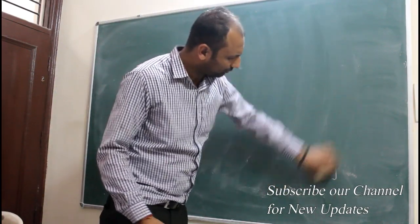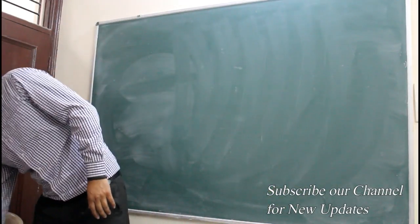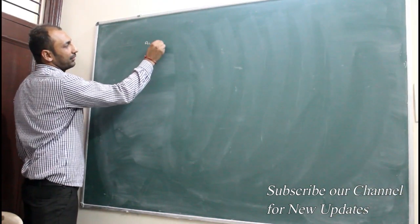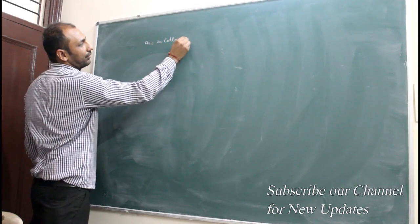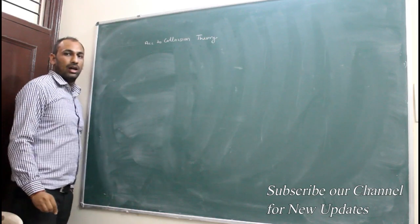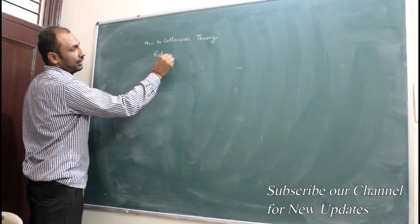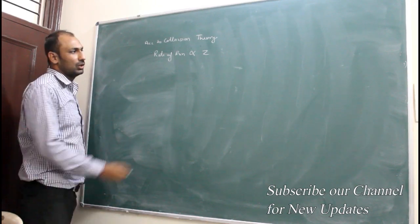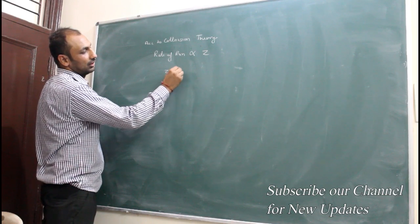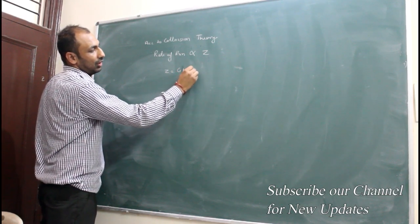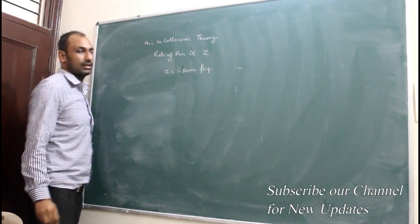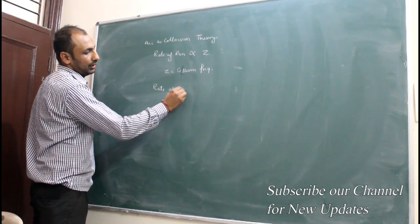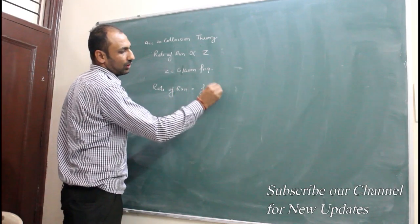According to Collision Theory, the rate of reaction is directly proportional to Z. Z is the collision frequency. So the rate of reaction is equal to F cross Z.